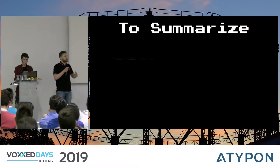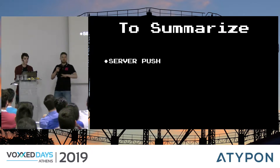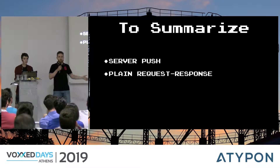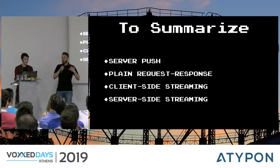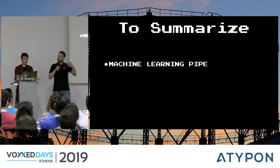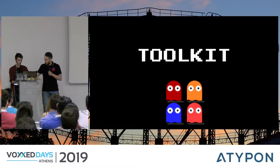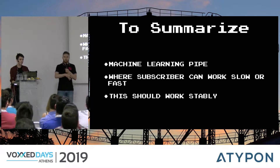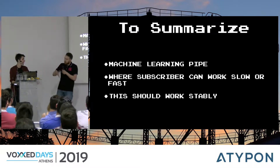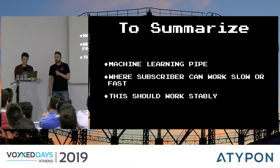Let's summarize what we have here. From a communication perspective — especially from an API perspective — we have some server-side push where we push tiles and additional data at the very beginning. Then we have plain request-response communication, just exchanging nickname and game state. Then the client sends streaming to send location updates, and listens to server-side streaming. In addition, we have a machine learning pipeline which could work slow or fast because we are in a distributed system — nothing is guaranteed. We have to provide stability for this part, because without stability we will lose data, which is unacceptable since you have to learn all user behavior to make the bot work properly.